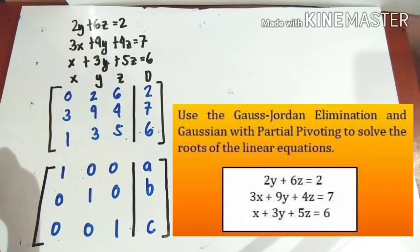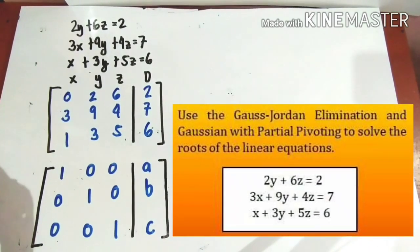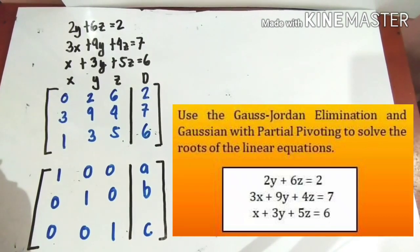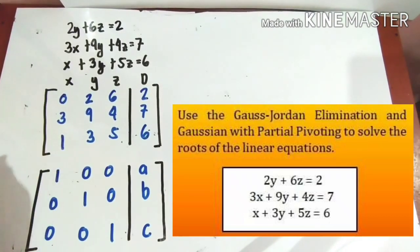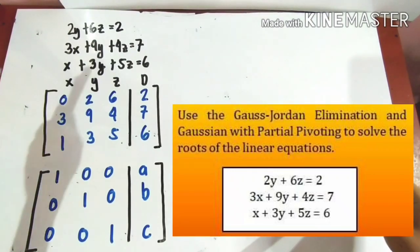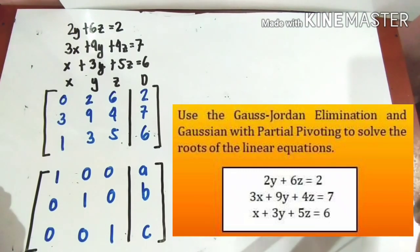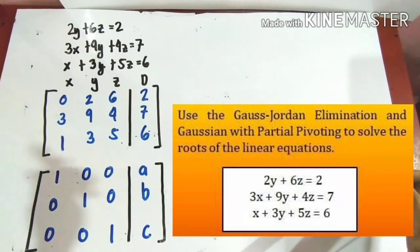Today, we will discuss the Gauss-Jordan elimination and Gaussian with partial pivoting to solve the roots of linear equations in three variables. For example, you have the equations: 2y + 6z = 2, 3x + 9y + 4z = 7, and x + 3y + 5z = 6.